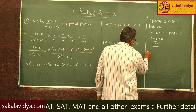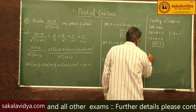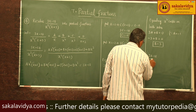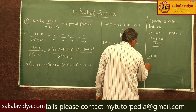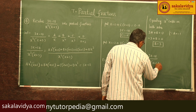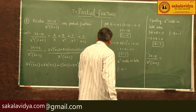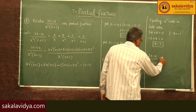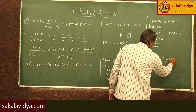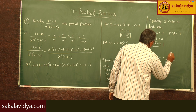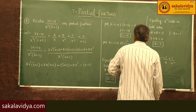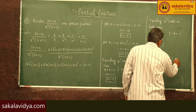Therefore: (3x minus 18) by x cubed (x plus 3) equals minus 1 by x plus 3 by x squared plus minus 6 by x cubed plus 1 by (x plus 3).